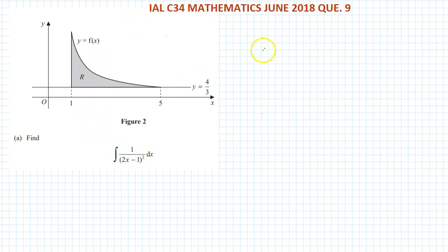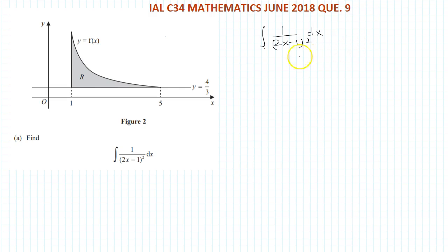Integrate 1 over (2x minus 1) squared — this is question number 9 for June 2018 IAL. We need to integrate 1 over (2x minus 1)² dx. Let's use substitution: let u equal 2x minus 1.